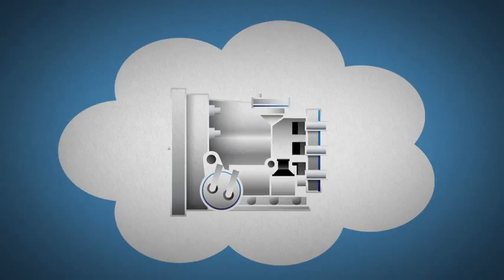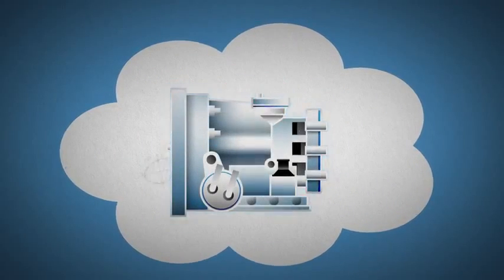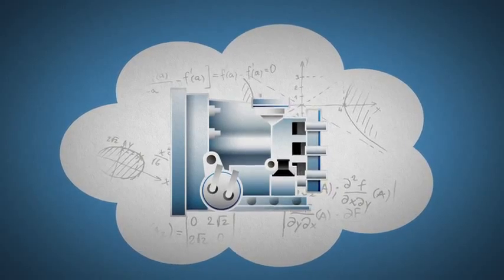Imagine an automatic transmission so smart, it perfectly rev-matches downshifts faster than a dual-clutch transmission.